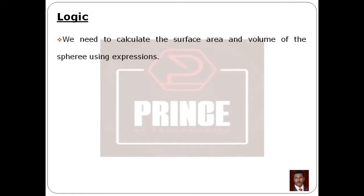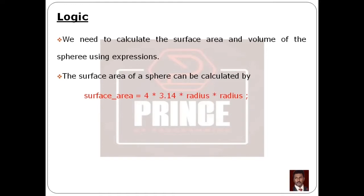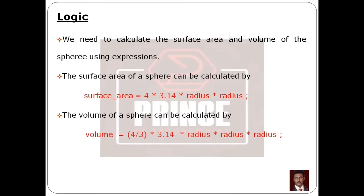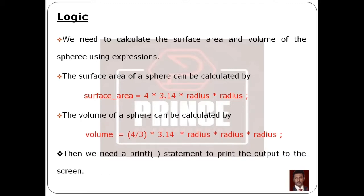Then we need to calculate the surface area and volume of the sphere using expressions. For surface area, we have 4 × π × r², that is 4 × 3.14 × radius × radius. If we calculate the surface area, we store it in an output variable. Similarly, volume is equal to 4/3 × π × r³, that is 4/3 × 3.14 × radius³. Using these expressions, we calculate the surface area and volume, then use a printf statement to print the output to the screen. That's all about the logic.